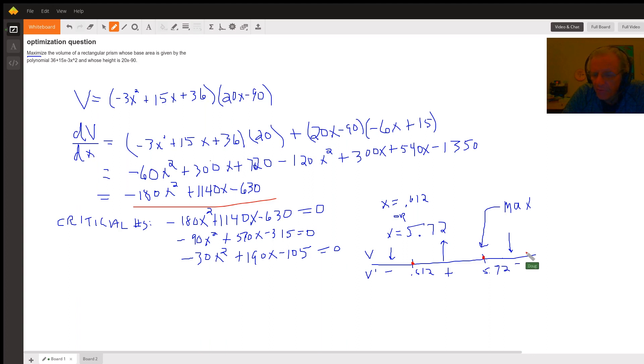And then to the right of 5.72, like put a six in here for x, I get a negative value, which means that the original function is decreasing. And the fact that we go from increasing to decreasing around this critical number means that this critical number produces a maximum. So if I could find v of 5.72, that would give me the maximum volume.